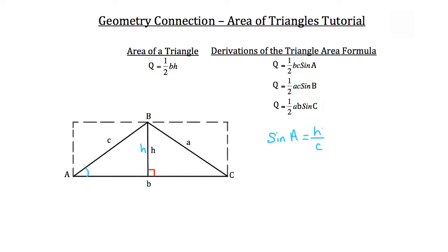To solve for just H, we multiply both sides of the equation by C. On the left-hand side we have C times the sine of angle A, which equals — on the right-hand side the C's cancel — and we have just the height H.